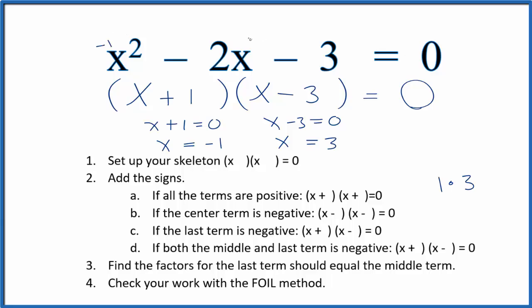If we put a minus 1 in for x and we do the math, all of this here will equal 0. Likewise if we put the 3 here in for x and we do the math, that also equals 0. So we know that these two numbers here are correct.